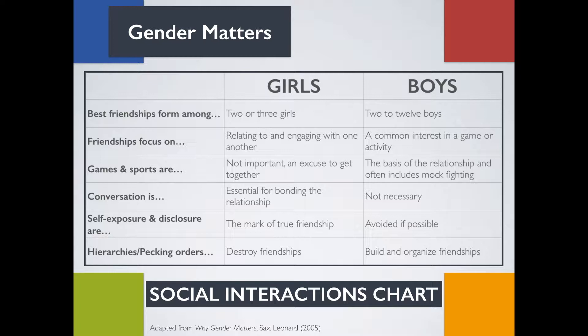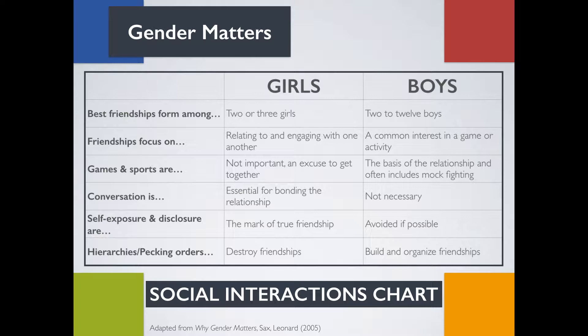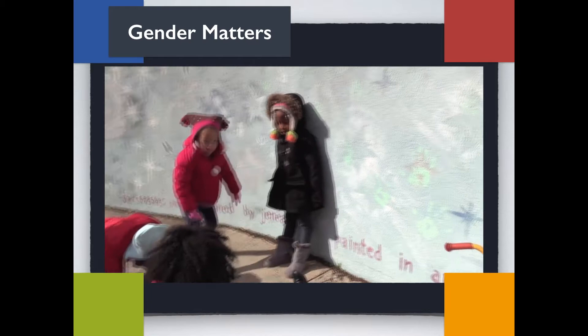Take a look at this social interactions chart. It's clear that boys and girls are different in the ways they form friendships and how they problem solve. Can you think of specific children and their interactions that support Leonard Sax's research? Let's focus on why their social interactions with each other are different.